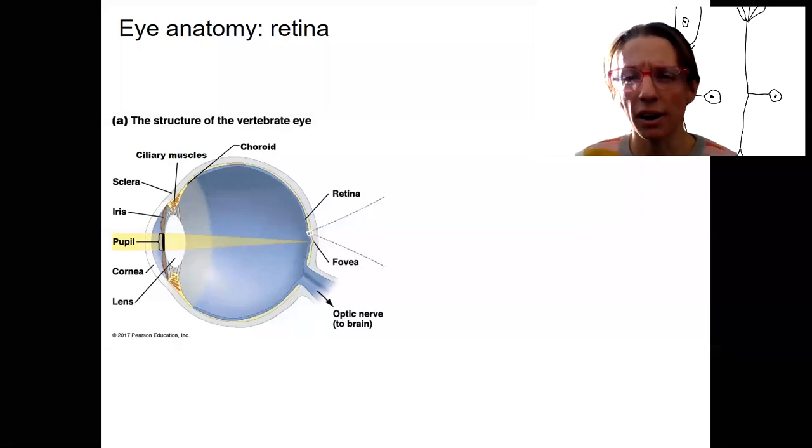Like I said, we'll be focusing on the retina. That's where the action happens. So all of these other structures in the eye, the goal of them is to help light focus right here.